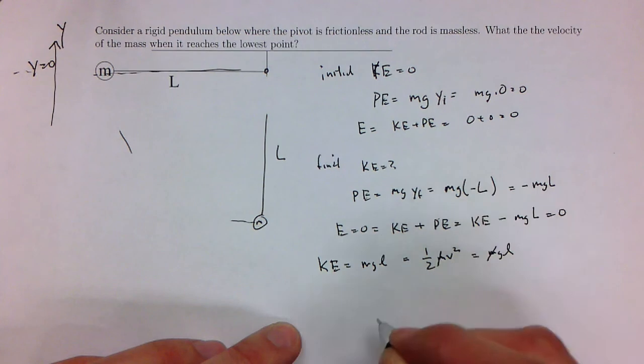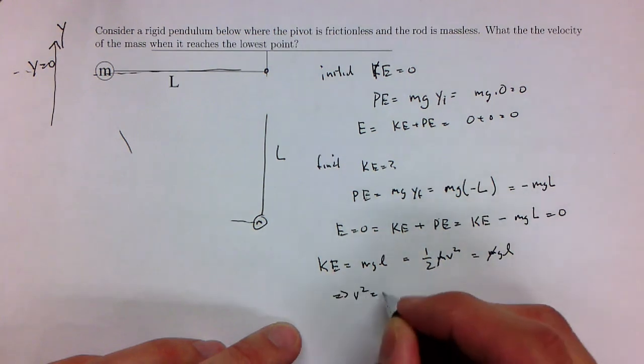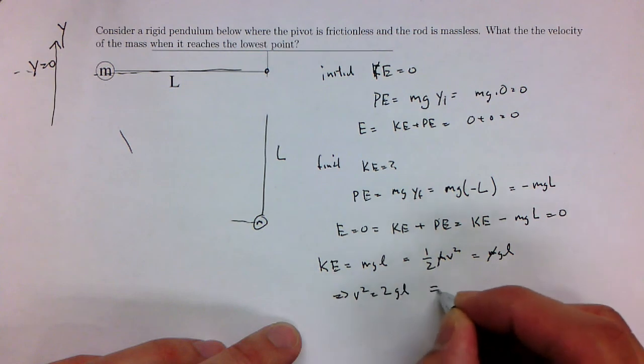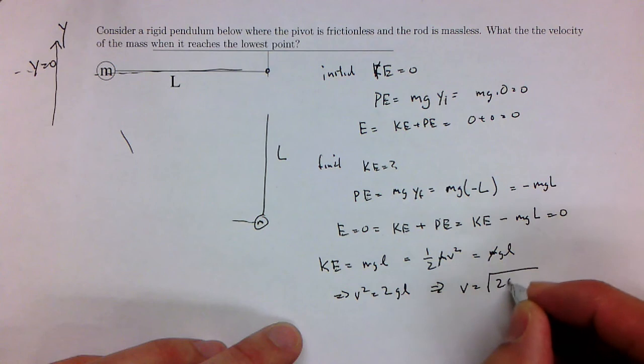Lo and behold, the m's cancel out. And so you end up getting v squared is equal to 2gL or v is equal to the square root of 2gL.